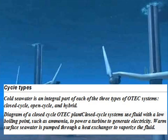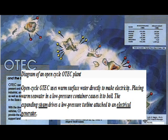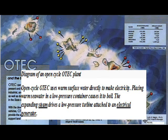Cold sea water is an integral part of each of the three types of OTEC systems: closed cycle, open cycle, and hybrid. To operate, the cold sea water must be brought to the surface. The primary approaches are active pumping and desalination.